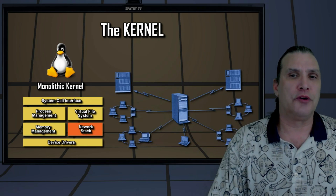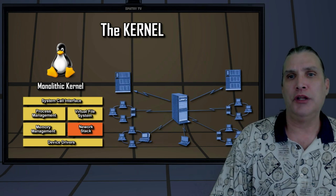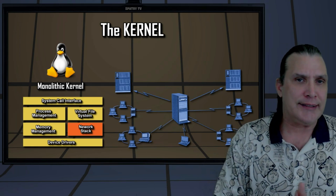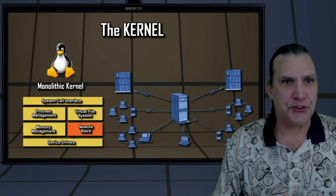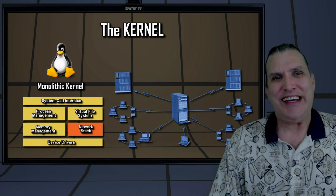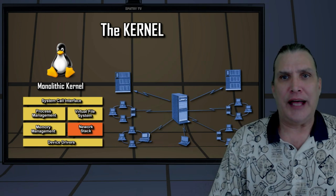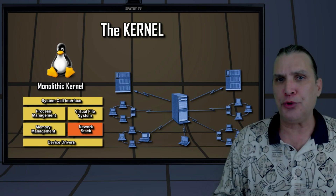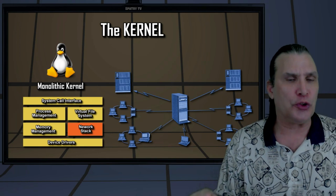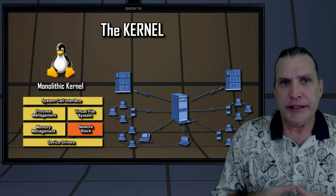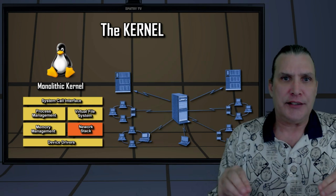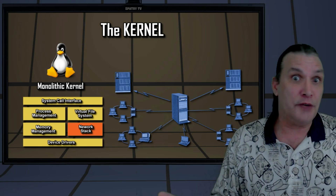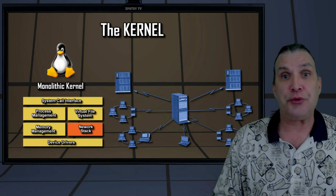Next on our tour of the Linux kernel, we will briefly discover its network capabilities. The network stack is what allows applications to access a network through a physical networking device. Networking devices can be modems, cable modems, ISDN, Wi-Fi devices, or Ethernet cards.